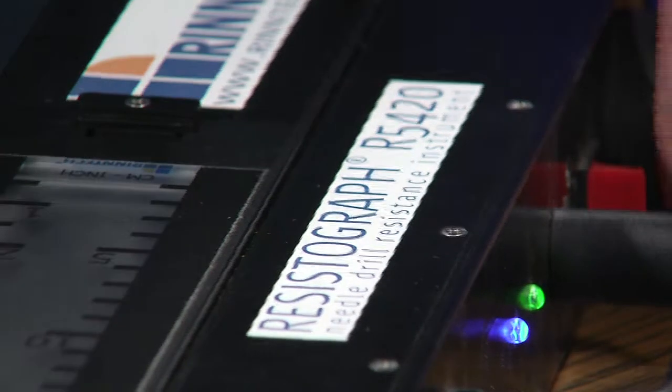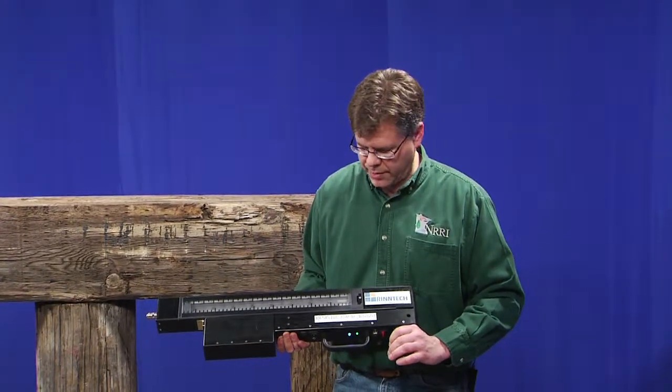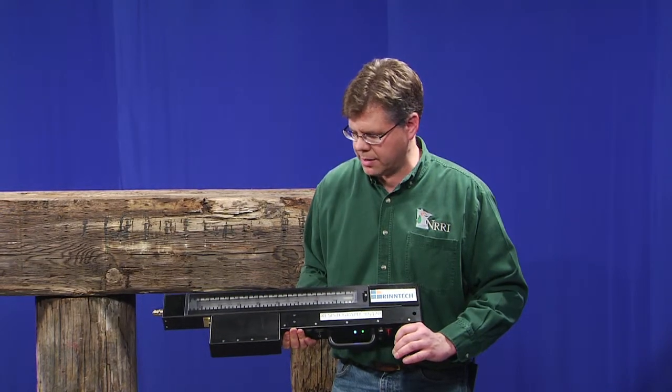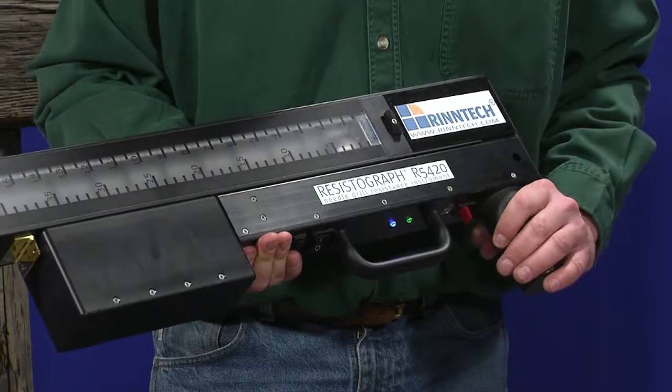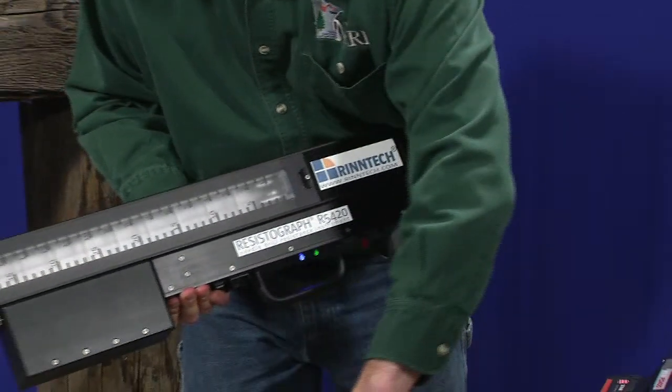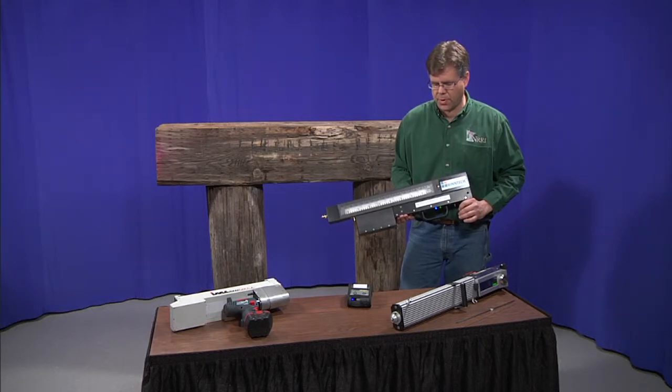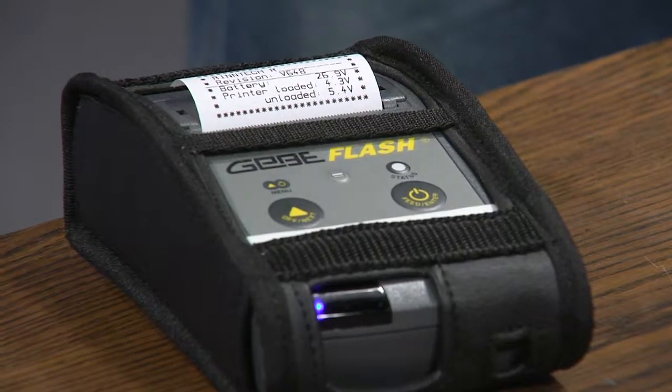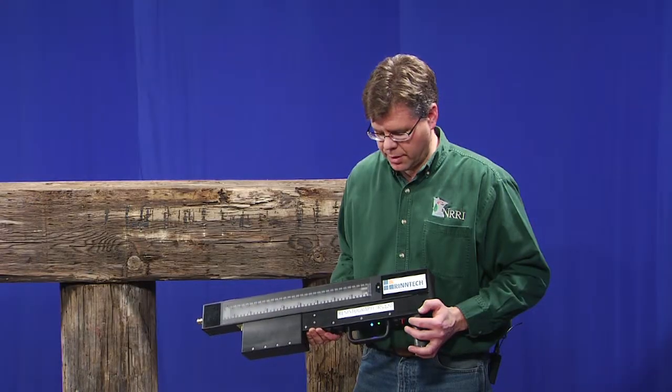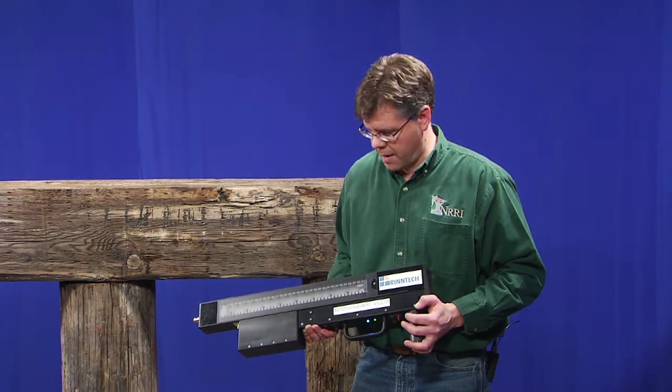The third unit that we have available is manufactured by RinTech in Germany. This is again an internal drill driven system that uses the same drilling needle technology to measure the density and wood quality as we move forward. In this case, the data is coupled electronically via Bluetooth connection to a portable printer that an inspector will have on site with them. The data is also collected and maintained internal to the machine itself for download to a laptop computer back in the office.